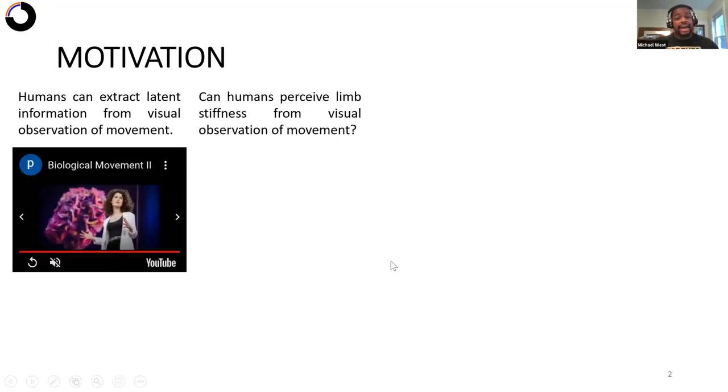However, we came to ask, can humans perceive limb stiffness from visual observation of motion? And we believe this question is important for two reasons. One, we have found that modulation of stiffness, or more generally mechanical impedance, is important for neuromotor control during physical interaction.